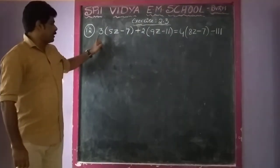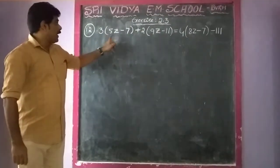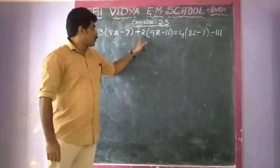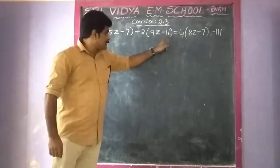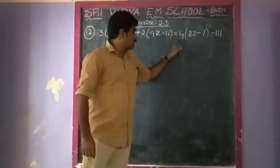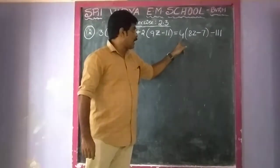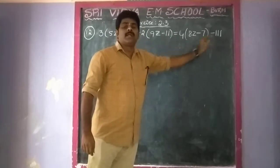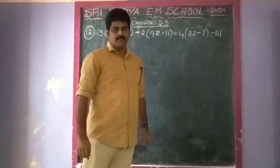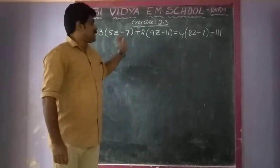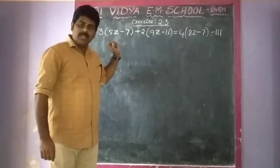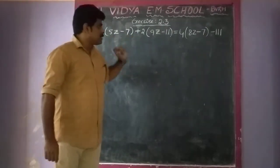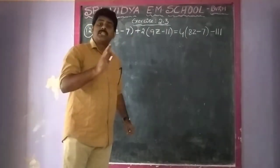What is Sum 12? 3 of (5z minus 7) plus 2 of (9z minus 11) is equal to 4 of (8z minus 11) minus 11. We need to find the value of z. Using distributive property.